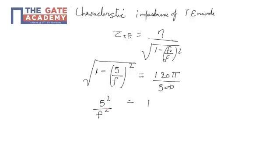1 minus 0.568, so this can be written as 0.432. 5 by f is nothing but 0.657.